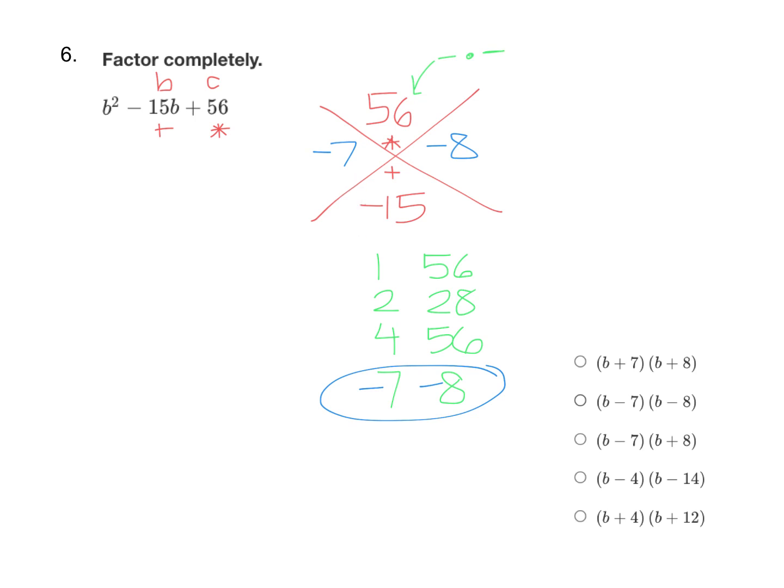That means those become our two factors and they join our variable, which is b. So b minus 7 and b minus 8.